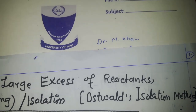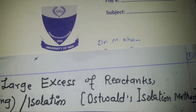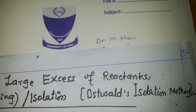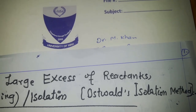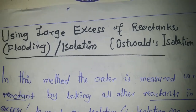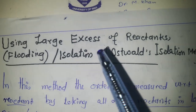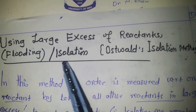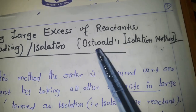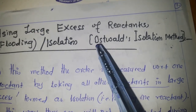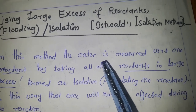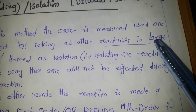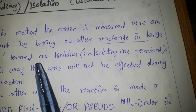Today we are going to discuss some more methods to determine the rate and the order of a chemical reaction. Among them, the first one is using a large excess of the reactants, which can also be named the flooding or isolation method. This is similar to Oswald's isolation method. In this method, the order is measured with respect to one reactant by taking all other reactants in large excess.